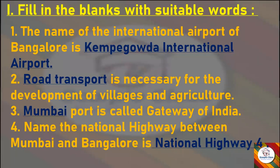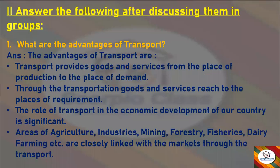With this we have finished fill in the blanks. Now let's move to the next section: answer the following questions. The first question is: what are the advantages of transport? Answer: Transport provides goods and services from the place of production to the place of demand. Through transportation, goods and services reach the places of requirement. The role of transport in the economic development of our country is significant. Areas of agriculture, industries, mining, forestry, fisheries, dairy farming, etc., are closely linked with the markets through transport.